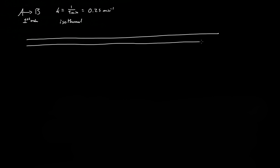We have some pipe, and we don't know the volume of this pipe — we actually want to find it. We have a volumetric flow rate V₀ equal to 100 liters per minute flowing through the pipe, which is relatively quick.